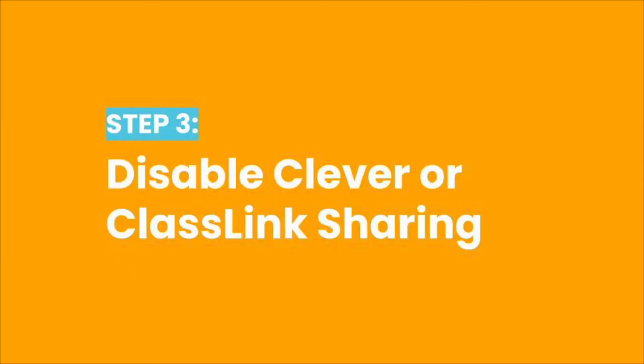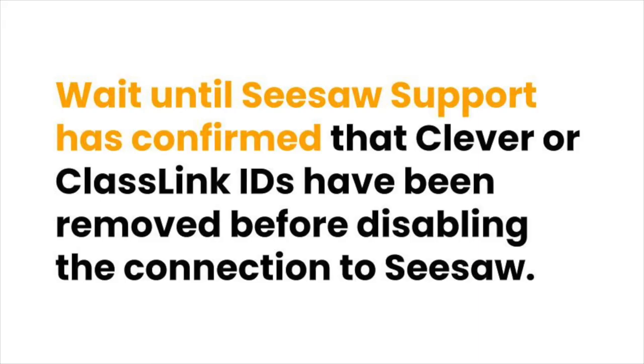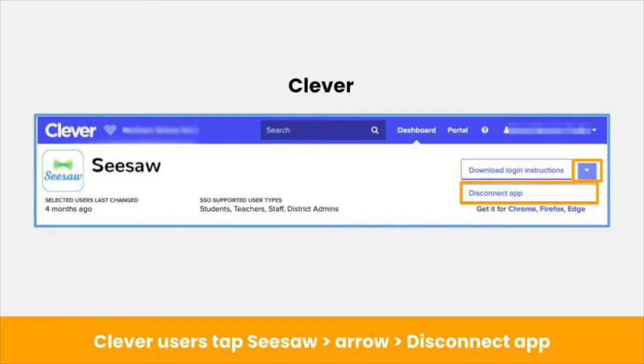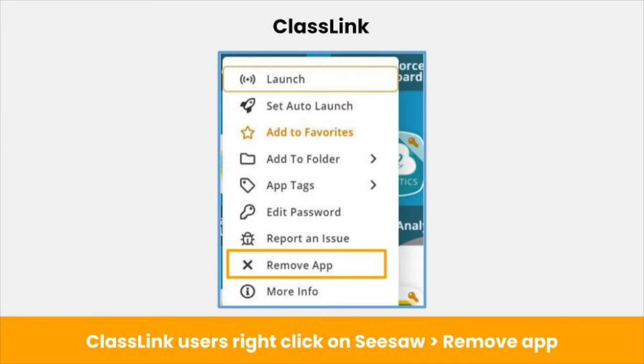Once Seesaw support has removed Clever or Classlink IDs, you can disable sharing. Please wait until Seesaw has confirmed this step is complete. Once confirmed, you can disable the connection between Clever or Classlink and Seesaw. Clever users: sign into your Clever admin account, tap Seesaw, then the arrow on the top right, then disconnect app. Classlink users: sign into your Classlink admin account, right-click on the Seesaw app, then click remove app.